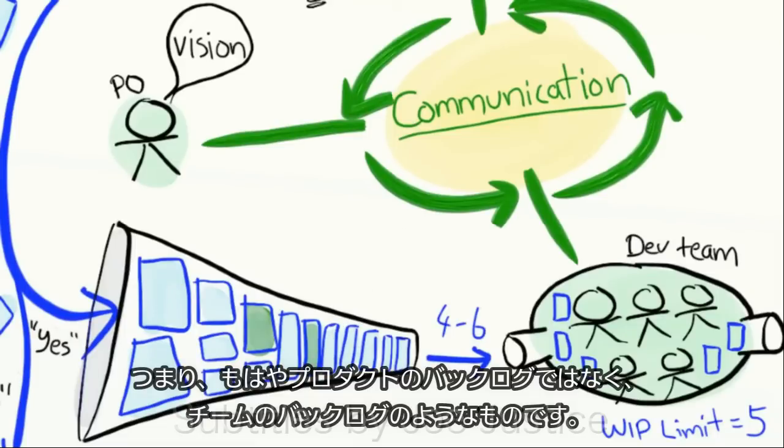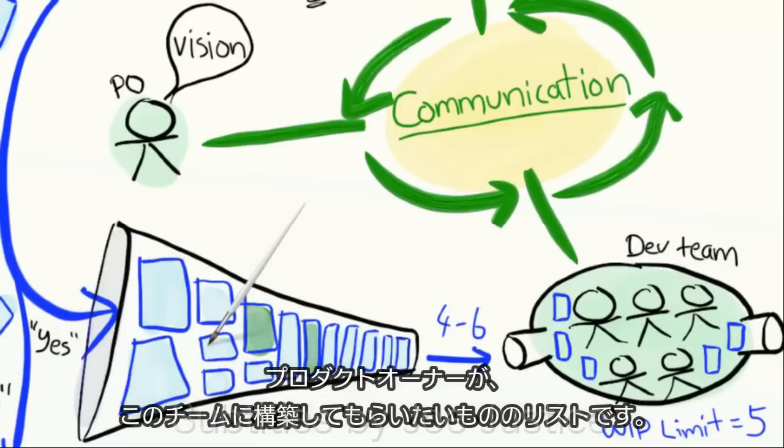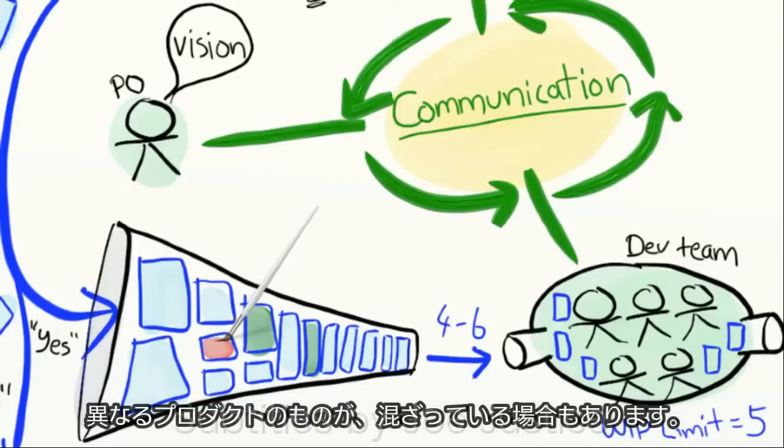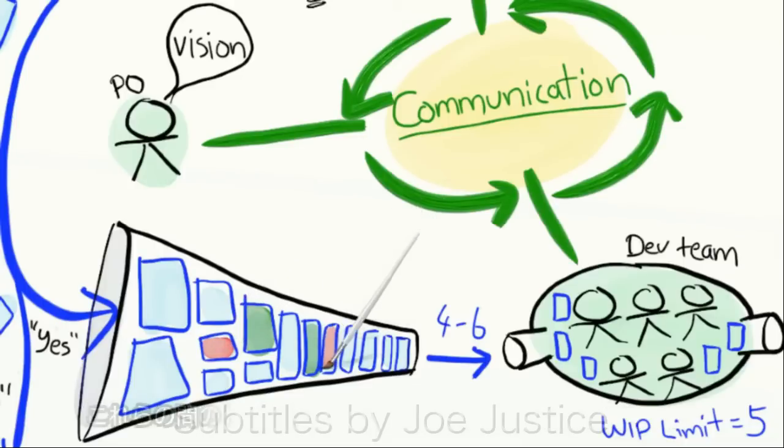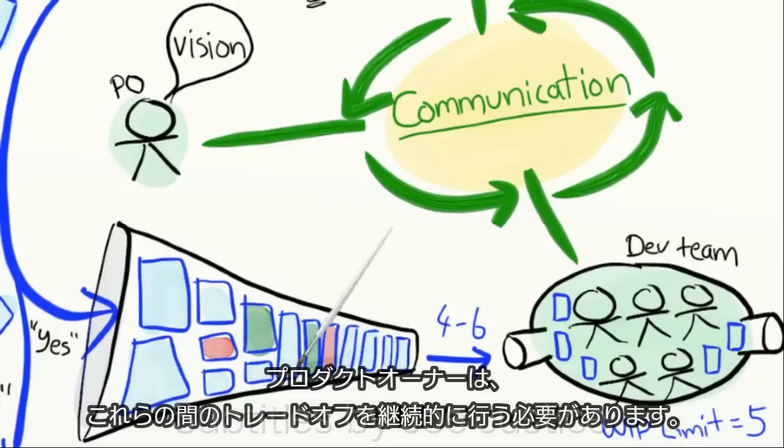So it's not really a product backlog anymore, it's more like a team backlog, a list of stuff that the product owner wants this team to build. And it can be a mix of stuff from different products. And the product owner needs to continuously make trade-offs between these.